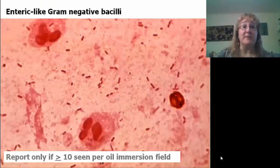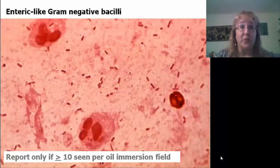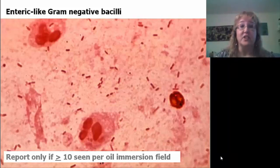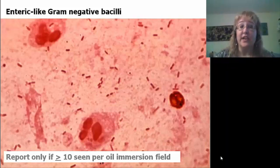Let's look at some gram stains. Here we have some nice plump gram-negative rods. Rather than just calling them gram-negative rods, since they look very much like enteric gram-negative rods, why not report them as enteric-like gram-negative bacilli? In a respiratory gram stain, we need to see at least 10 before reporting them.